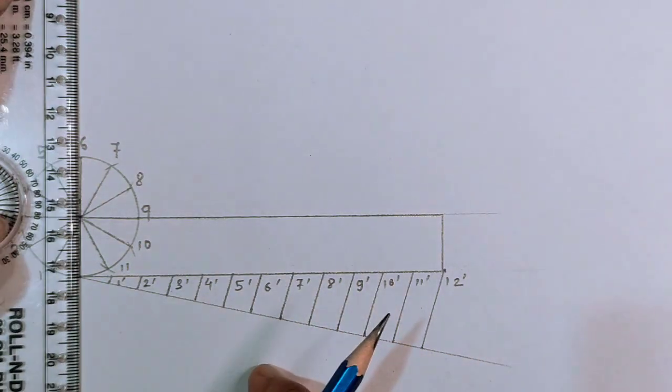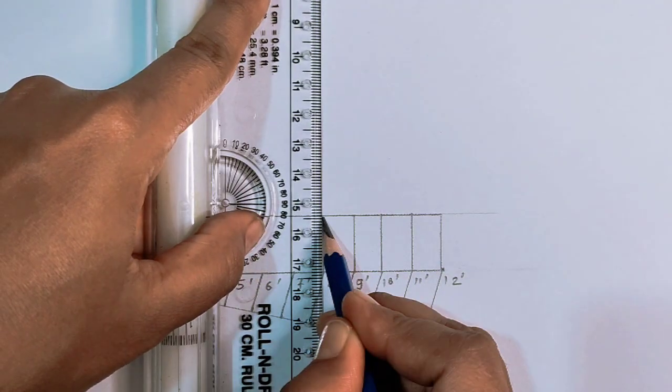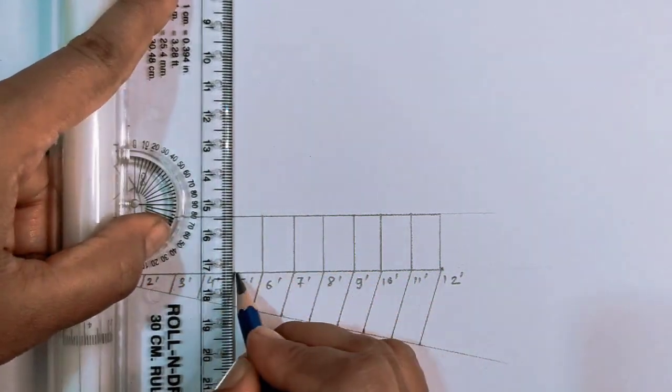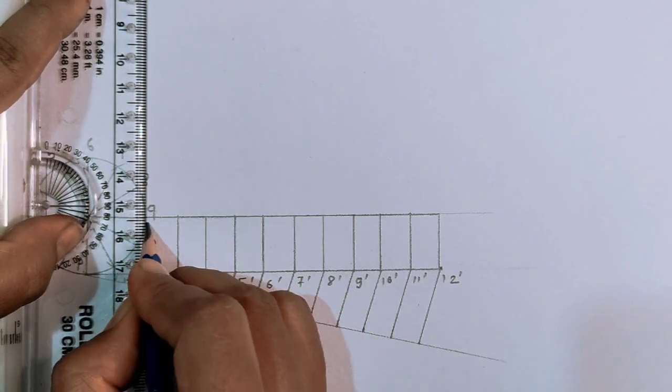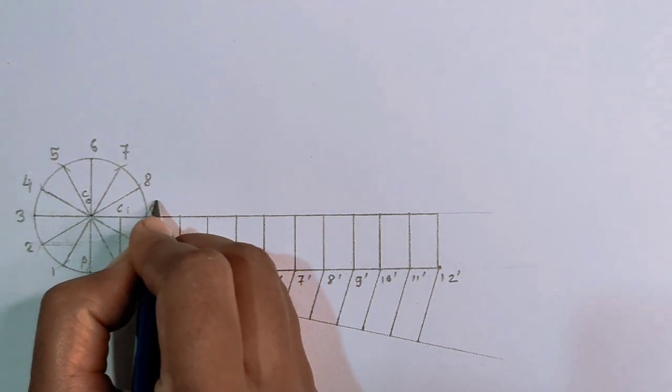Draw a line perpendicular to the directing line at point 1 dash, 2 dash, 3 dash, up to 12 dash, and mark them as C1, C2, C3, up to C12 where they intersect the center line respectively.